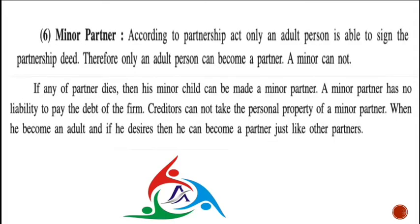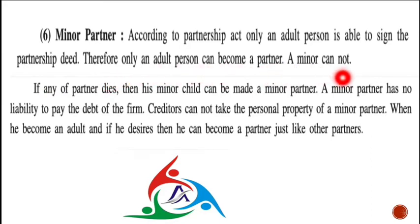The sixth type is minor partner. According to the Partnership Act, only an adult person is able to sign the partnership deed, so a contract with a minor is not valid in law. However, there is a provision: if any existing partner dies, then that partner's minor child can become a minor partner in the firm.